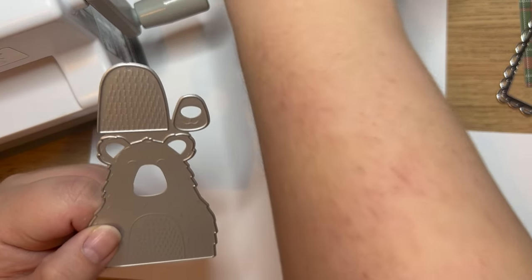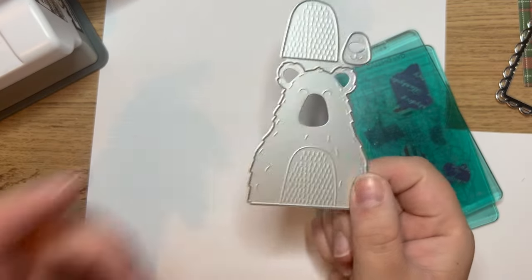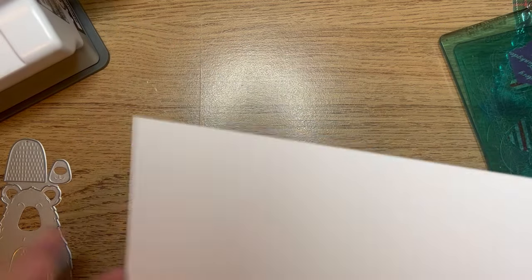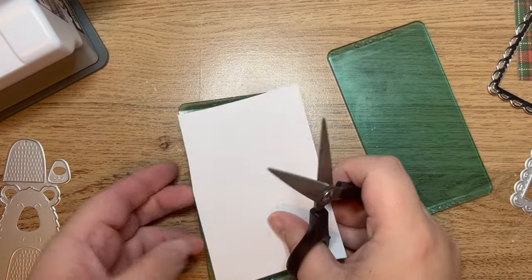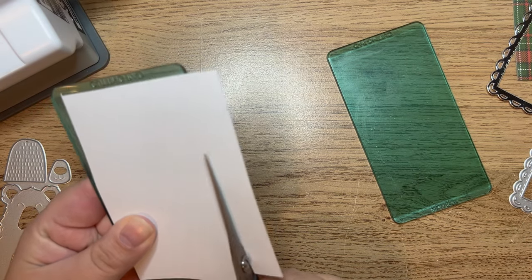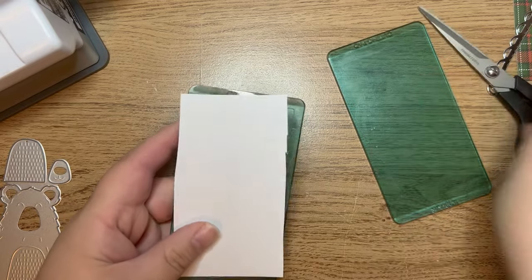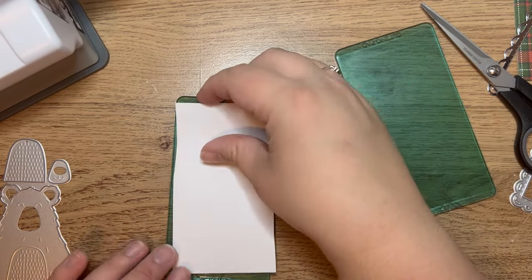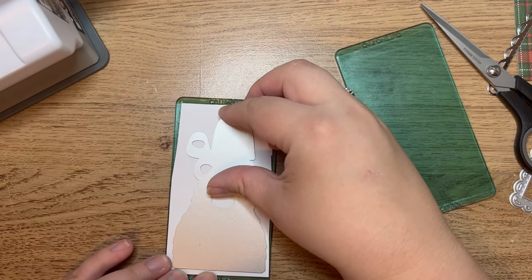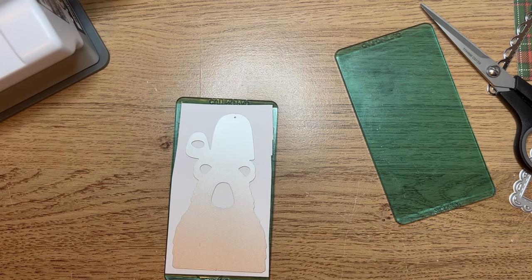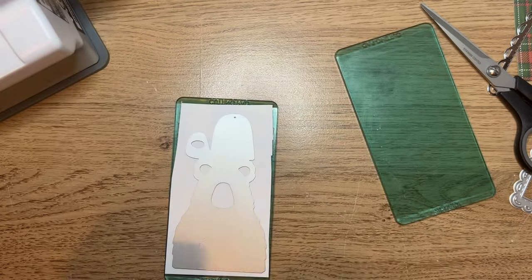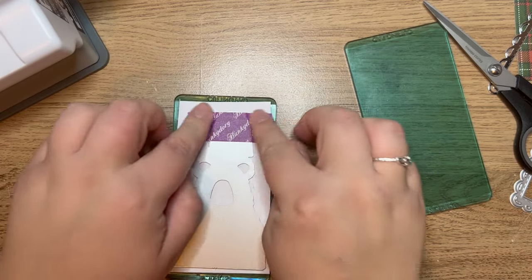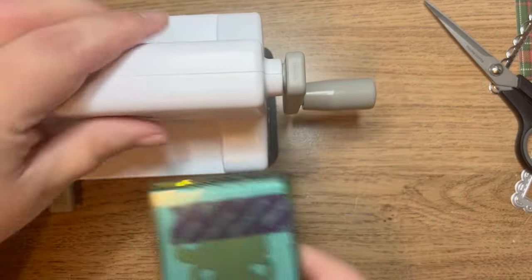The character dies all fit through my Sizzix Sidekick, so if you only have a small die cutting machine you can still use the characters and sentiments. I'm going to cut some white cardstock and die cut my main bear. I'll use low tack tape to make sure it's secure. Last thing I want is to find that Mr Bear has moved.